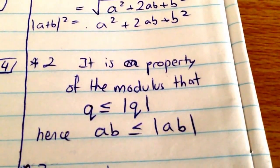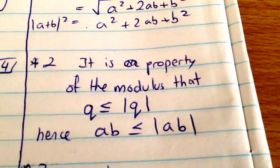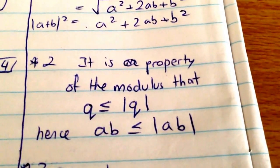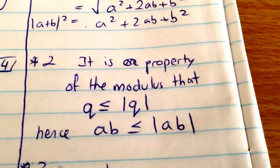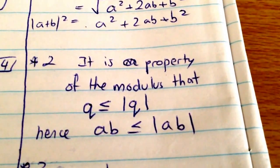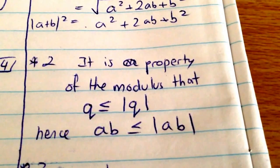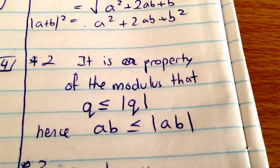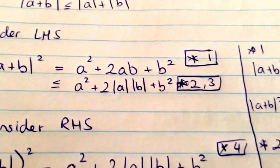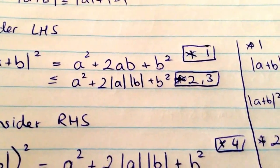Well, it is a property of the modulus. If we have q, then q is less than or equal to mod of q. And hence, we can say the same thing about ab, because ab would just be some constant. ab would be less than or equal to mod of ab. So that's how we are able to get the less than or equal to sign.